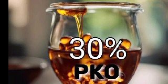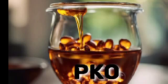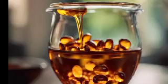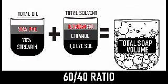The total volume of our soap will use the ratio of 60/40 — that is, 60% solvent and 40% oil. The palm stearin and PKO together will be 40% of our total volume, and any solvents we use will all be 60% of the total volume.